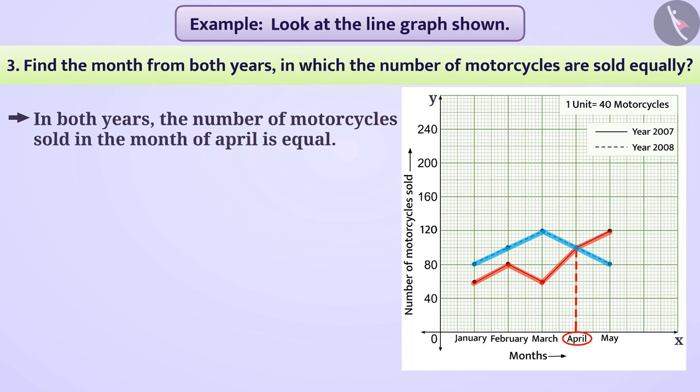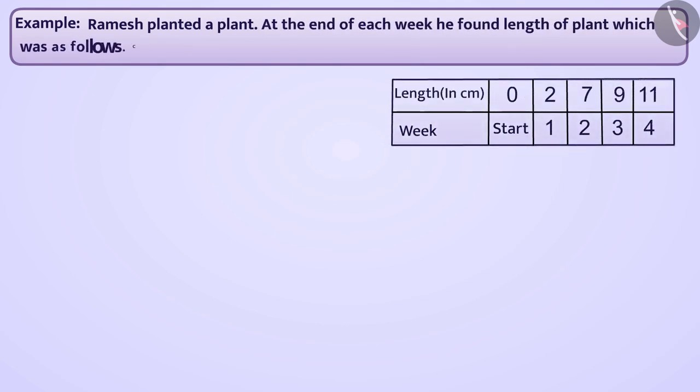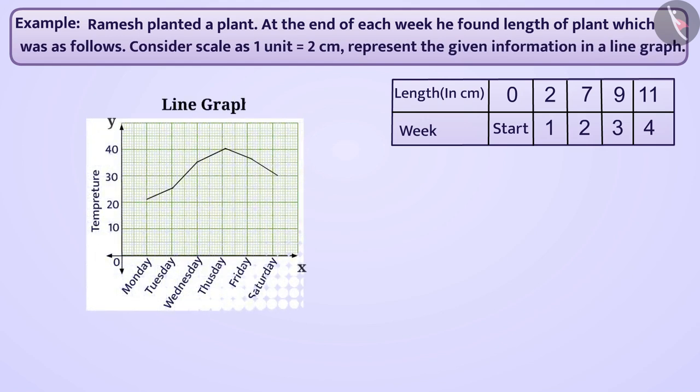Let's see the next example. Ramesh planted a plant. At the end of each week, he found the length of the plant which was as follows. Consider scale as one unit equals 2 cm. Represent the given information in a line graph.